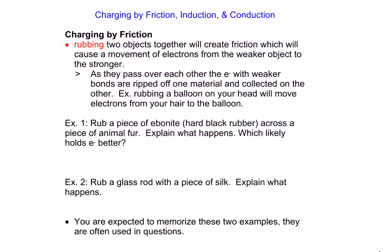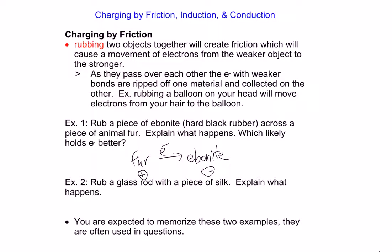There are two common examples that show up on diplomas you need to know. The first one: if we rub a chunk of ebonite — which is just hard black plastic or rubber material — with some sort of hair or fur, we get electrons moving. Just like the balloon and hair example, the hair or fur particles give up electrons and those electrons go to the ebonite.